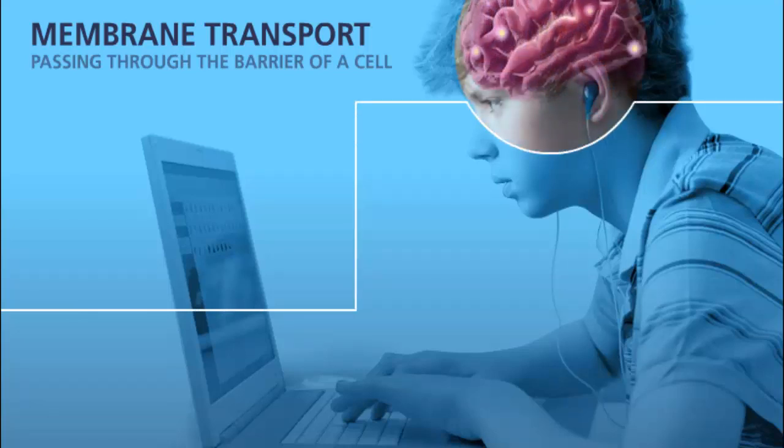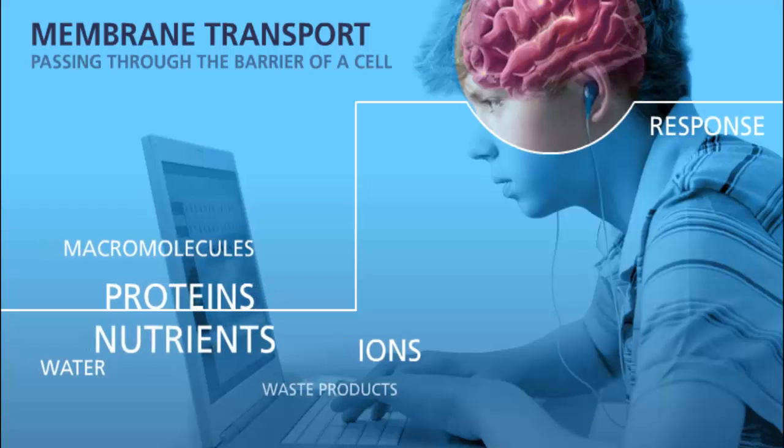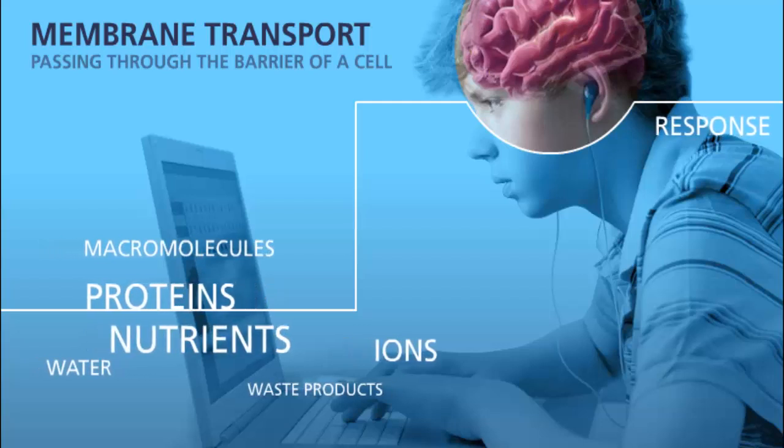For example, in order for the cells of your nervous system to function properly, ions, water, proteins, and other molecules need to be able to pass into and out of cells.